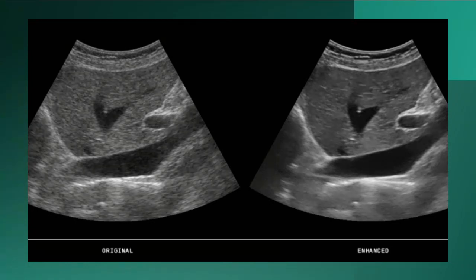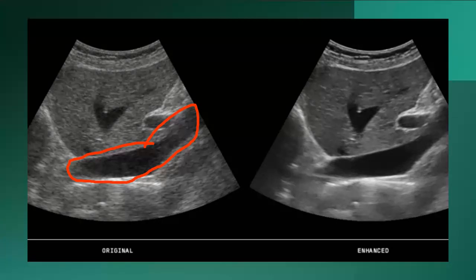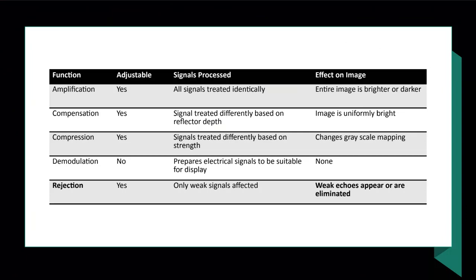An example shows the IVC posterior to the left lobe of the liver filled with noise. Using rejection to remove those low-level echoes produces a nice anechoic IVC as expected. To summarize the receiver process: amplification → compensation → compression → demodulation → rejection. You need to know the substeps of each function for the registry. Reference the chart from the textbook while studying to determine what's happening at each step.